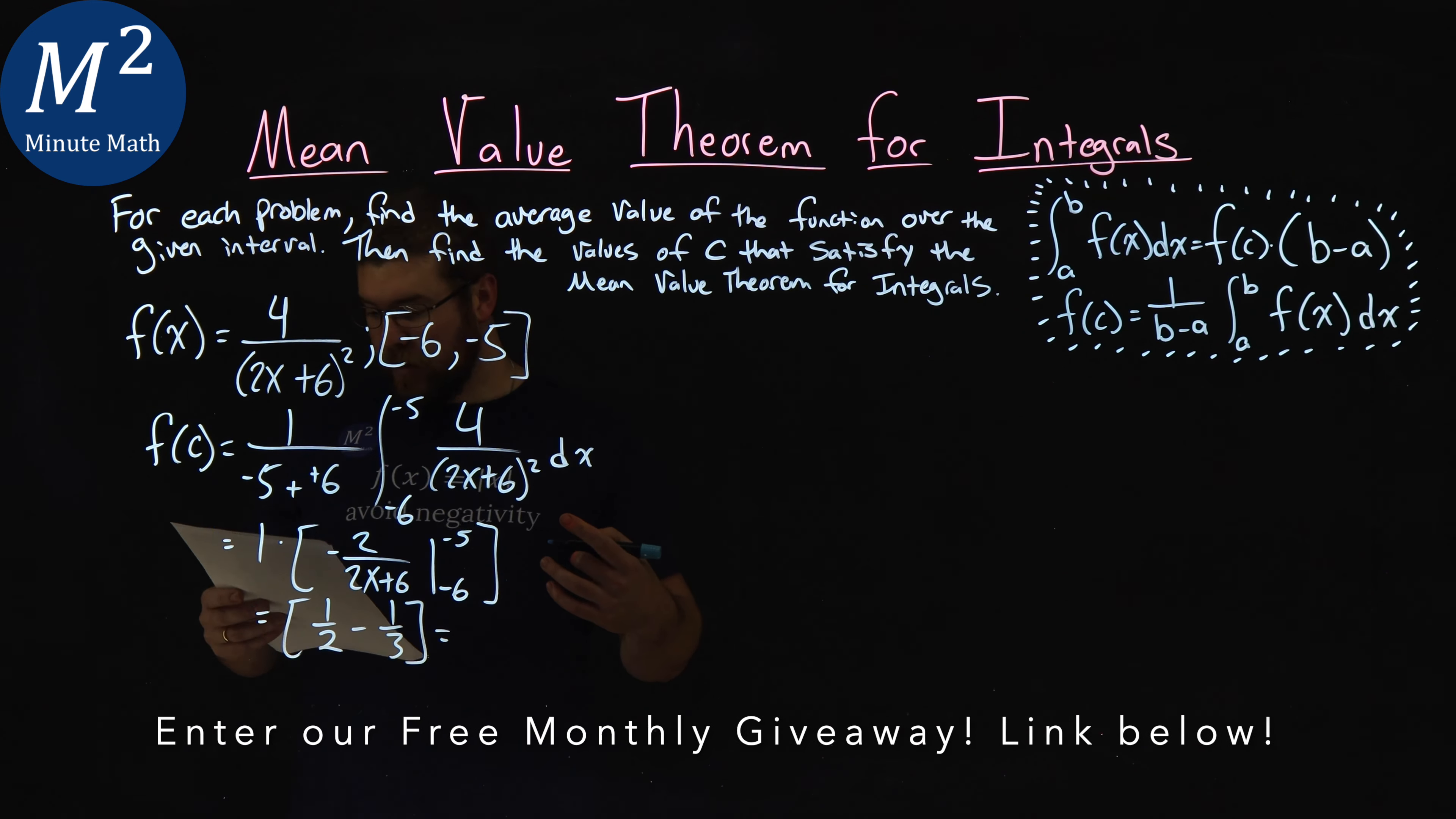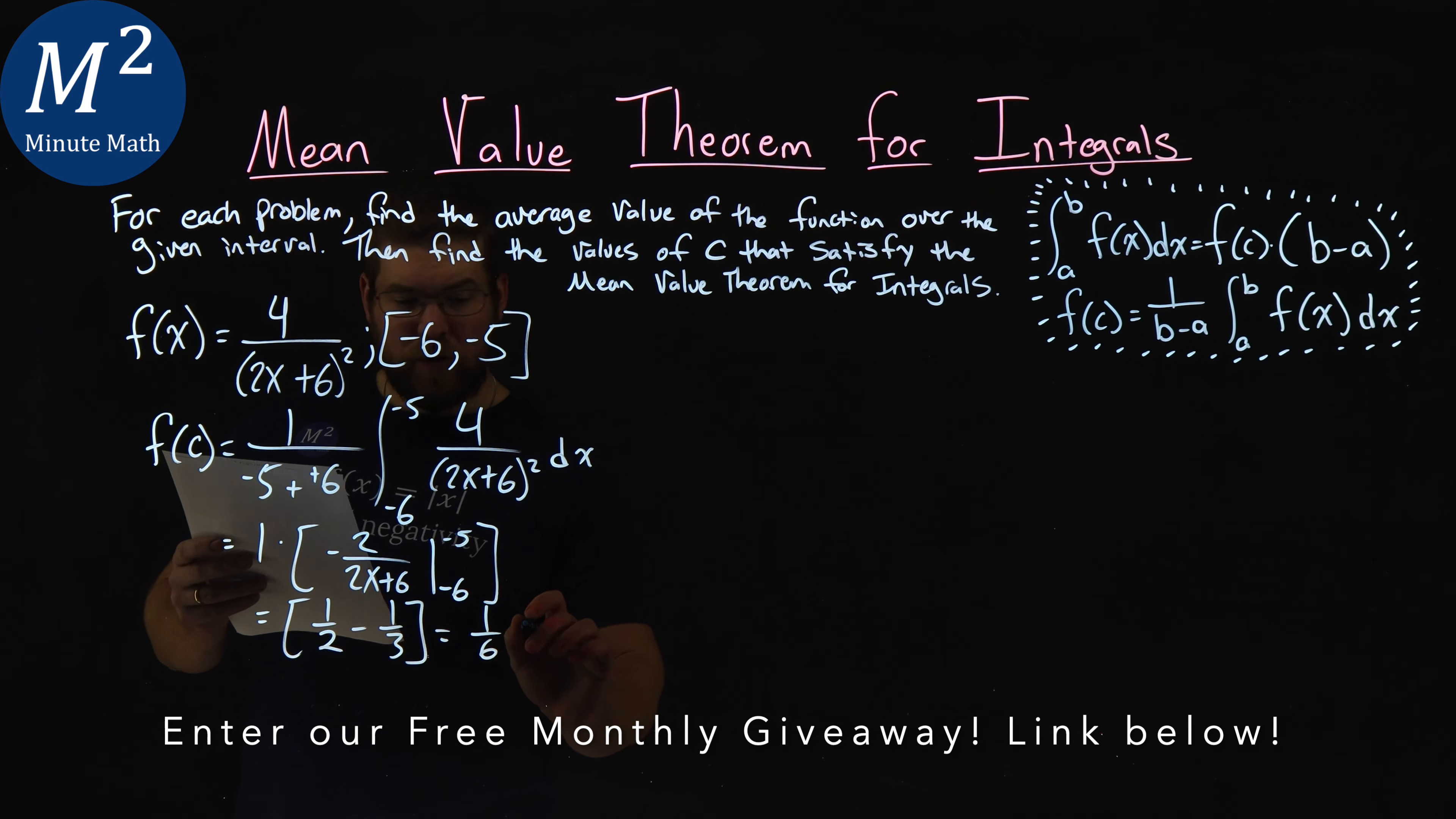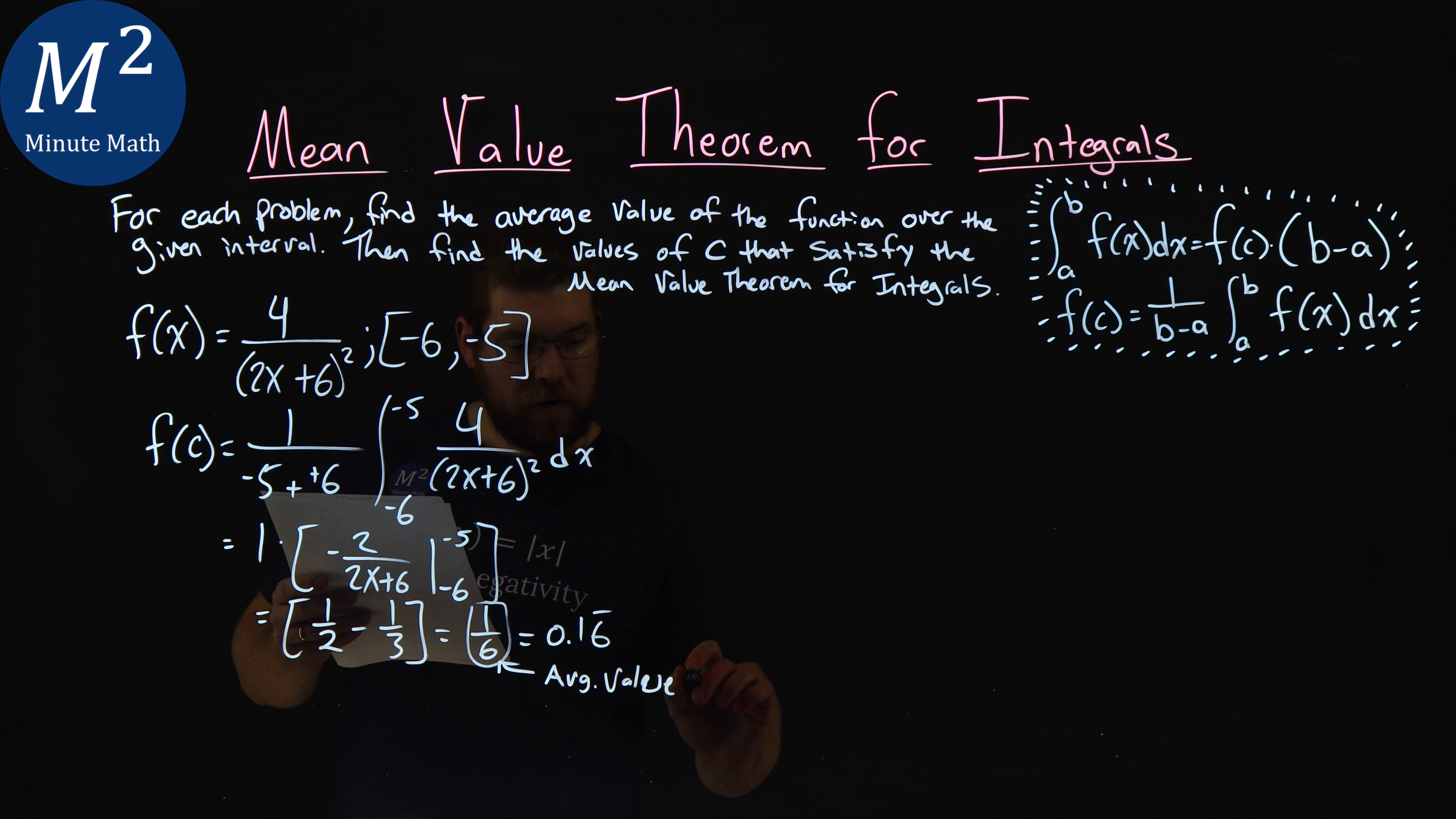1 half minus a 1 third comes out to be a 1 sixth, which is equal to 0.16 repeating. So 1 sixth is, right here, the average value of the function.